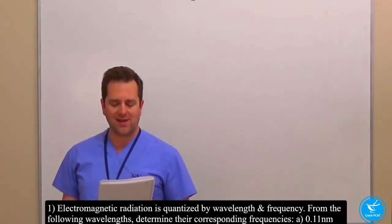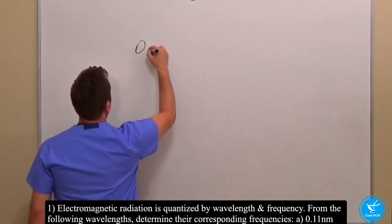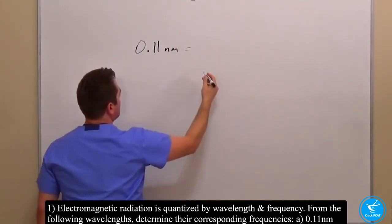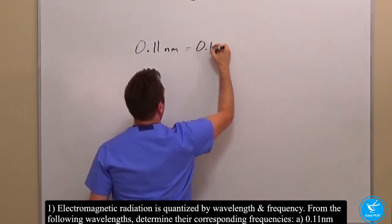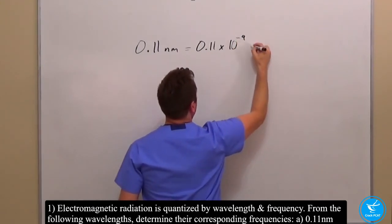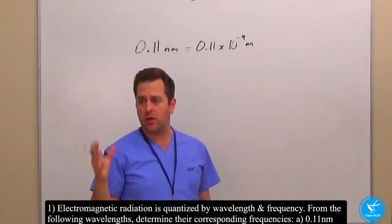we have 0.11 nanometers. So 0.11 nanometers. Now if you think about it, that's the same thing as 0.11 times 10 to the negative 9 meters. If we want to try to get it into the base unit of length to make...